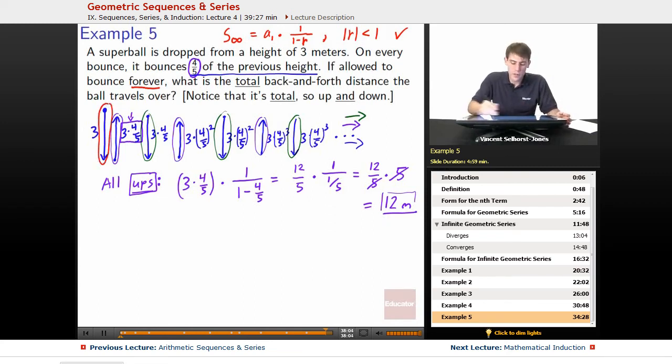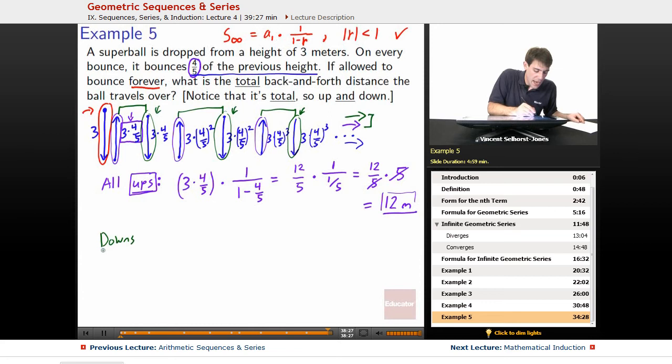But notice, all of these green things, they wind up having a matching up value, right? They each match up. The purple and the green, the purple ups and the green downs all match up. The only guy who's sort of out of the normal case of matching up is that red first drop down. So what that means is that all of our downs has a matching 12 meters because it matches all of the ups, but then we just have to add on the initial 3 meter drop at the beginning.